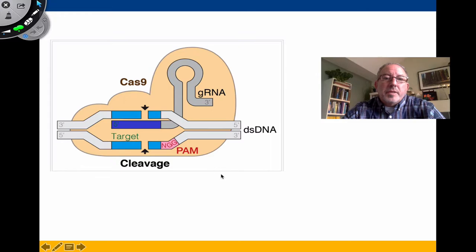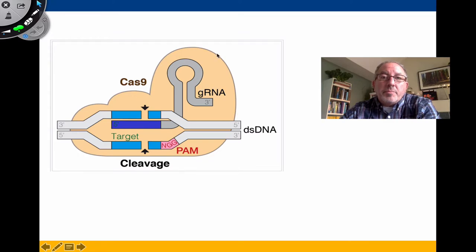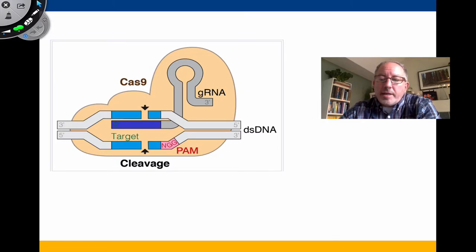The Cas9 and RNA complex goes out and finds viral DNA and cuts it so the bacteria survive. Scientists have been able to take the guide RNA and tracer RNA and produce something called single guide RNA. A hairpin loop attaches to the Cas9 endonuclease, and the purple region can be synthesized in the lab to anneal with any target DNA — allowing Cas9 to cut, knock out, edit, or repair genes with donor DNA.